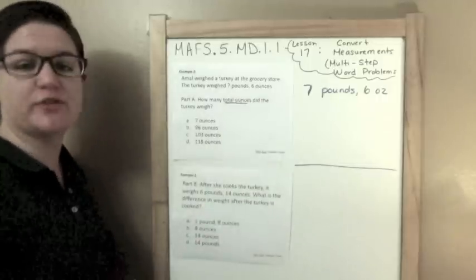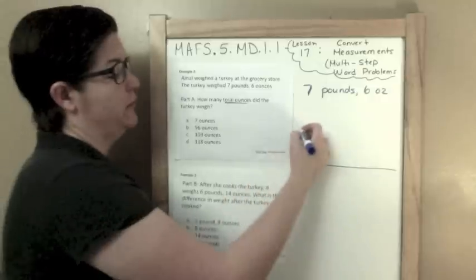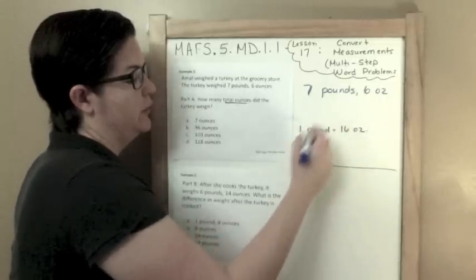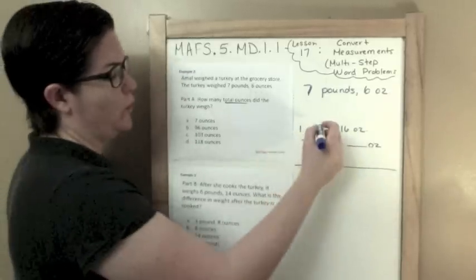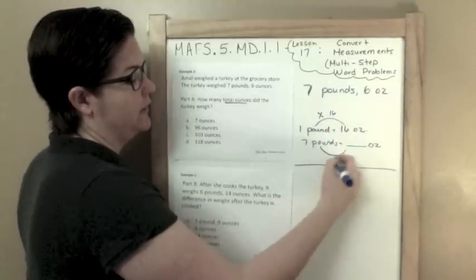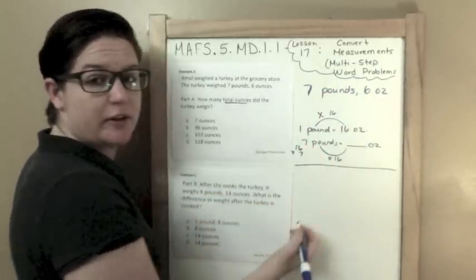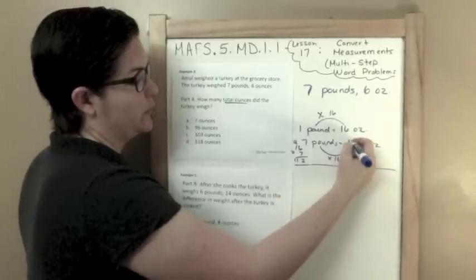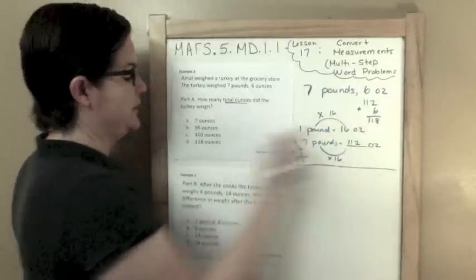We're trying to find out how many total ounces, so we've got pounds and ounces, but we need to convert it to just ounces. If you look at your FSA reference sheet, you'll notice that one pound equals 16 ounces. Seven pounds — to get from one to 16 we're multiplying by 16. So 16 times seven: six times seven is 42, seven times one is seven plus four is 11, so that equals 112 ounces. But we also need to add on our six ounces. So 112 ounces plus six equals 118 ounces, which is answer D.